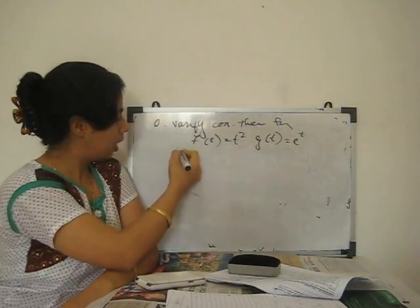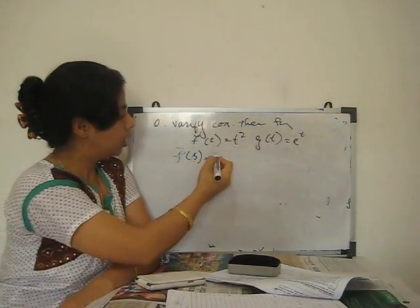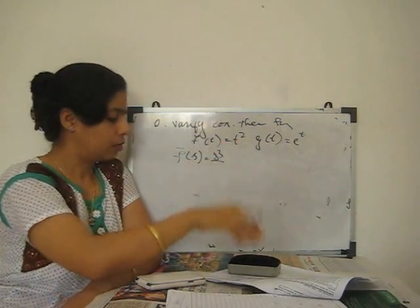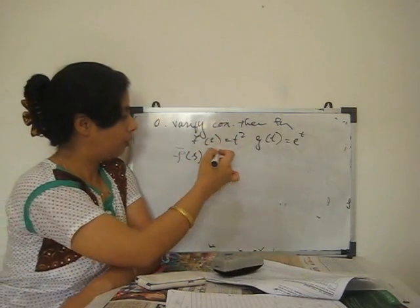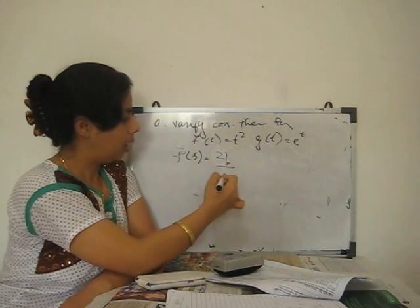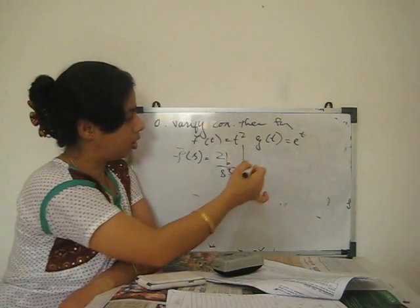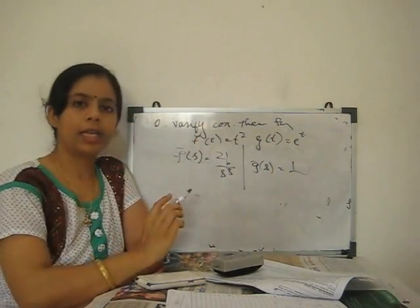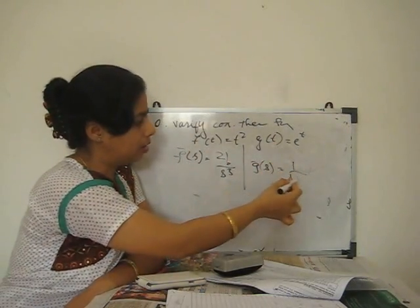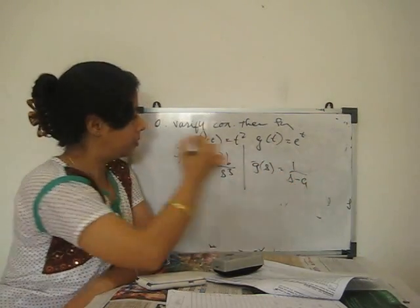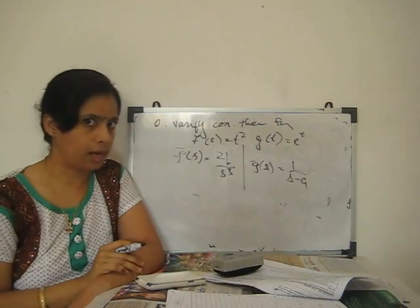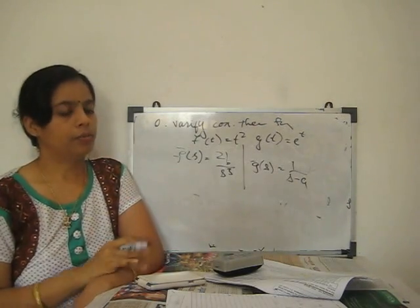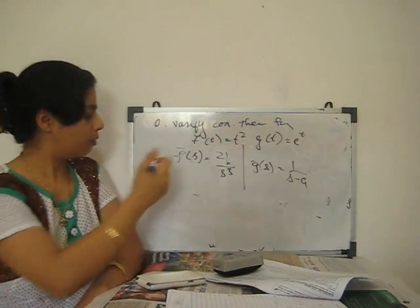First find F̄(s): L{t²} = 2!/s³ = 2/s³. Then find Ḡ(s): L{eᵗ} = 1/(s−1), since a = 1. So F̄(s)·Ḡ(s) = 2/[s³(s−1)]. Now apply the definition of convolution to verify: L{∫₀ᵗ u²·e^(t−u) du} should also equal 2/[s³(s−1)].